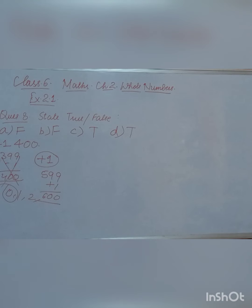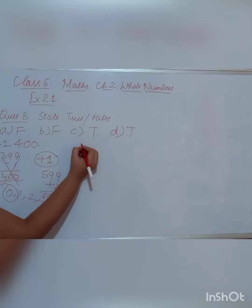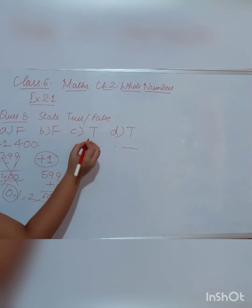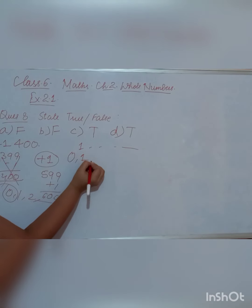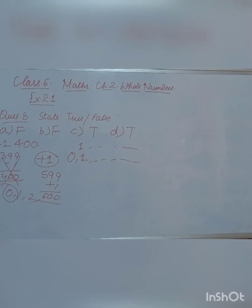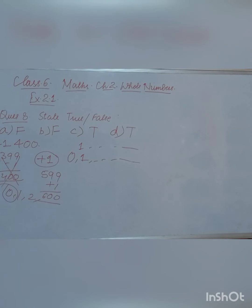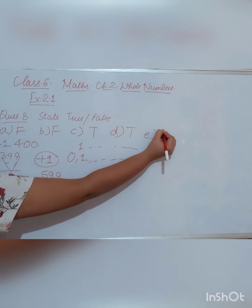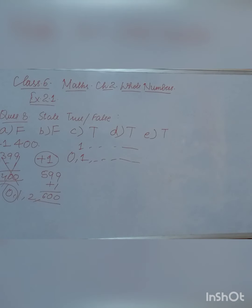The E part says: 'All natural numbers are whole numbers.' This is correct. Natural numbers start from 1, while whole numbers start from 0. Since whole numbers include 0 as an extra, every natural number is also a whole number. So all natural numbers are whole numbers — this 5th statement is also true.